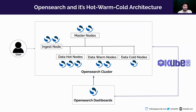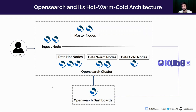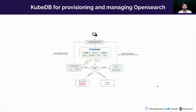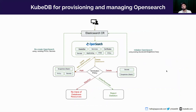This approach is particularly valuable in scenarios where large volumes of data need to be indexed, stored, and queried — such as log analytics and time series data analysis. KubeDB helps deploy dedicated hot-warm-cold clusters along with master nodes, ingest nodes, and dedicated data nodes, as well as the OpenSearch Dashboard. In this release, we are also adding support for other node types like frozen nodes, machine learning nodes, transform nodes, and coordinating nodes.